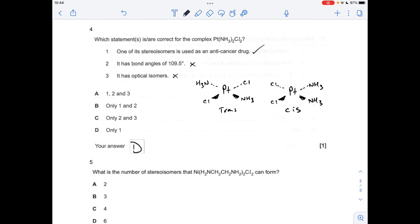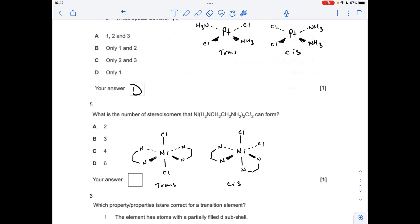Moving on to number five: what's the number of stereoisomers that this complex of nickel can form? You'll notice I've drawn up the trans isomer—that's where the chlorines or these bidentate ligands are 180 degrees apart. The cis version is where the chlorines are 90 degrees apart.